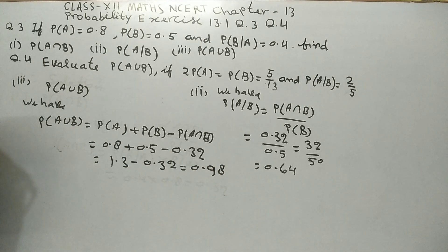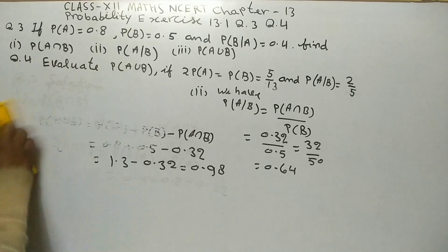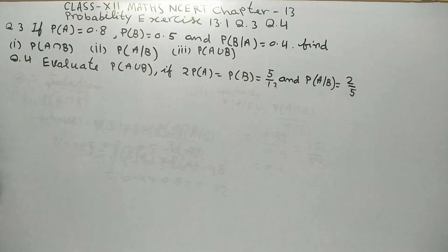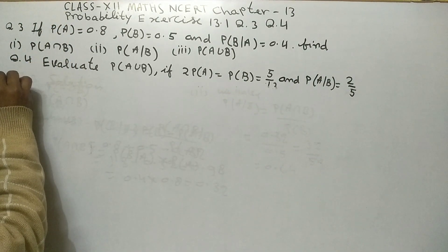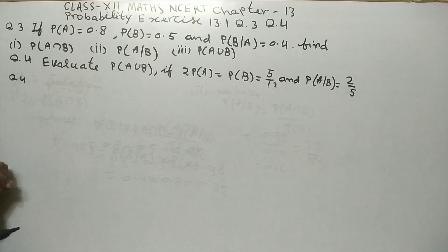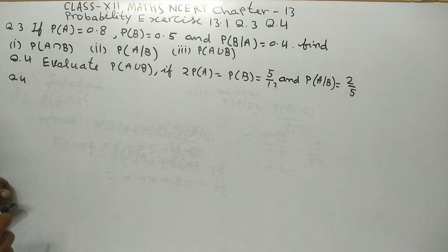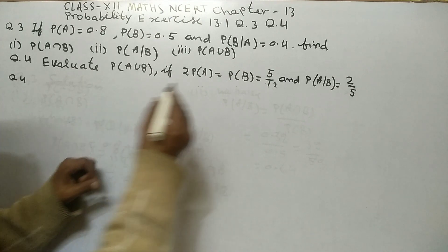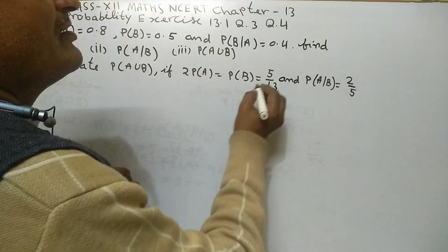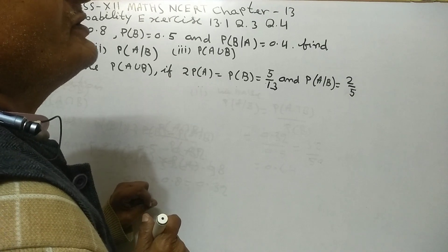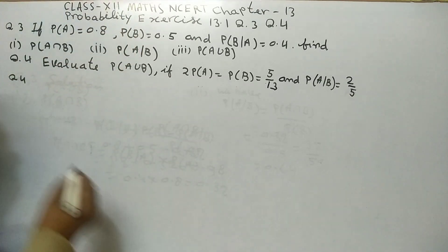Now, question 4th. Evaluate probability of A union B, if 2 times probability of A equals probability of B equals 5 upon 13, and probability of A given B equals 2 upon 5.